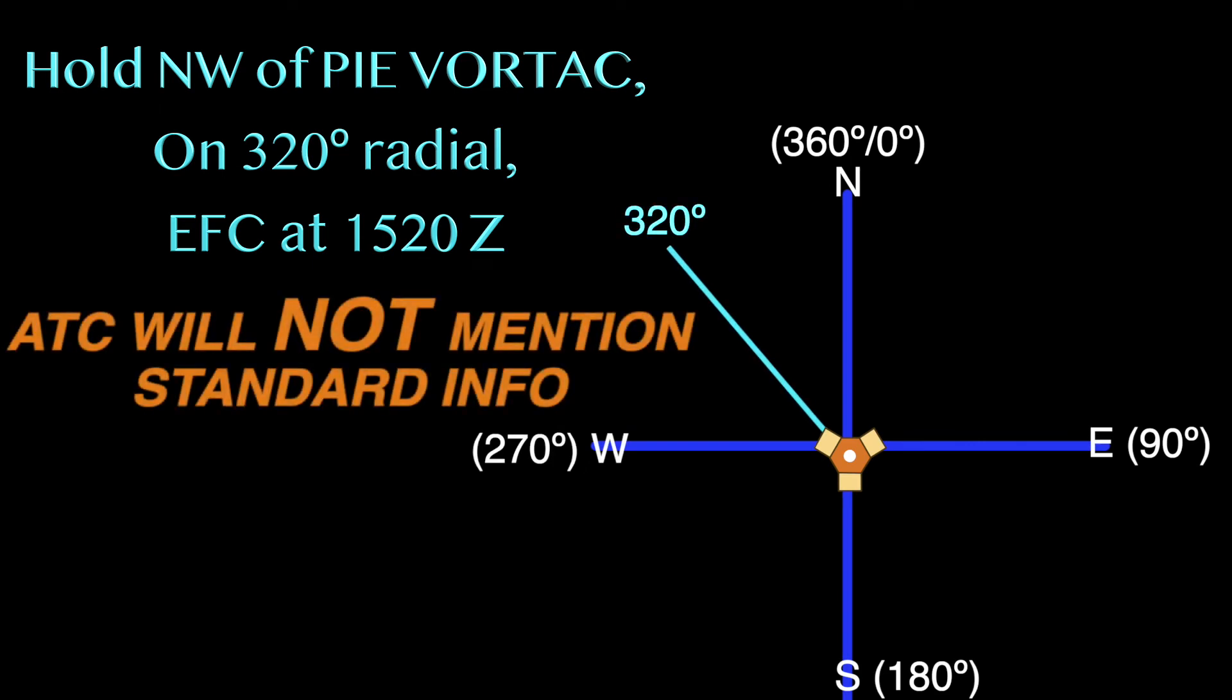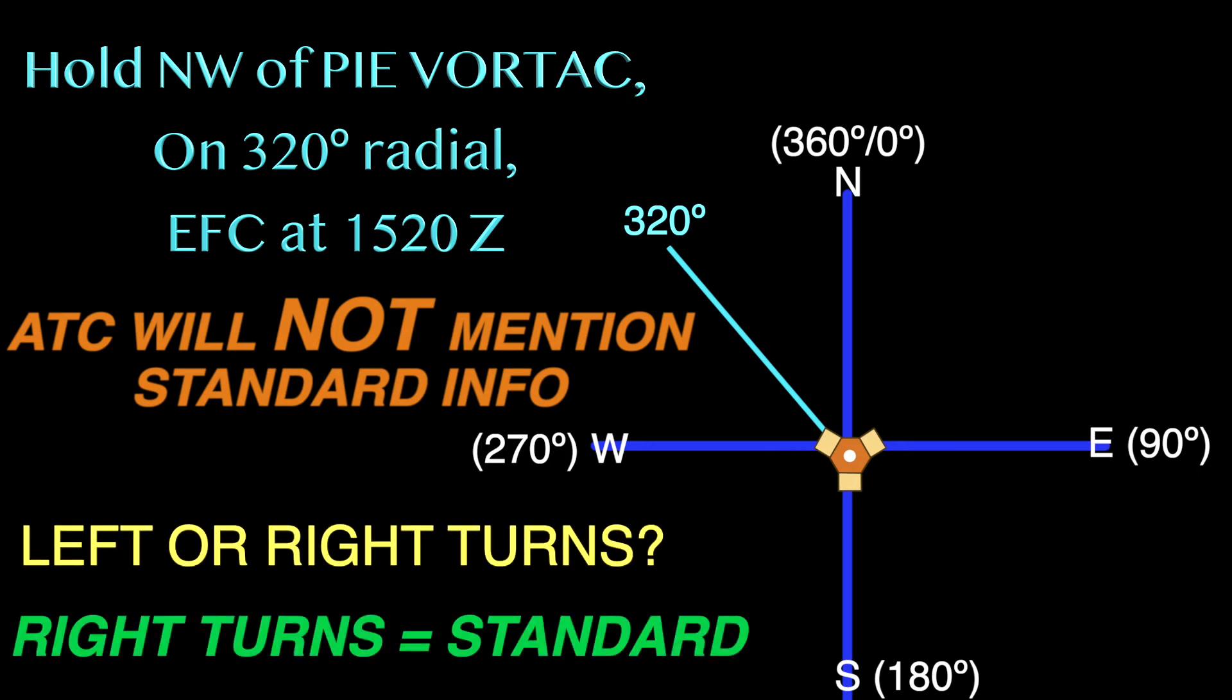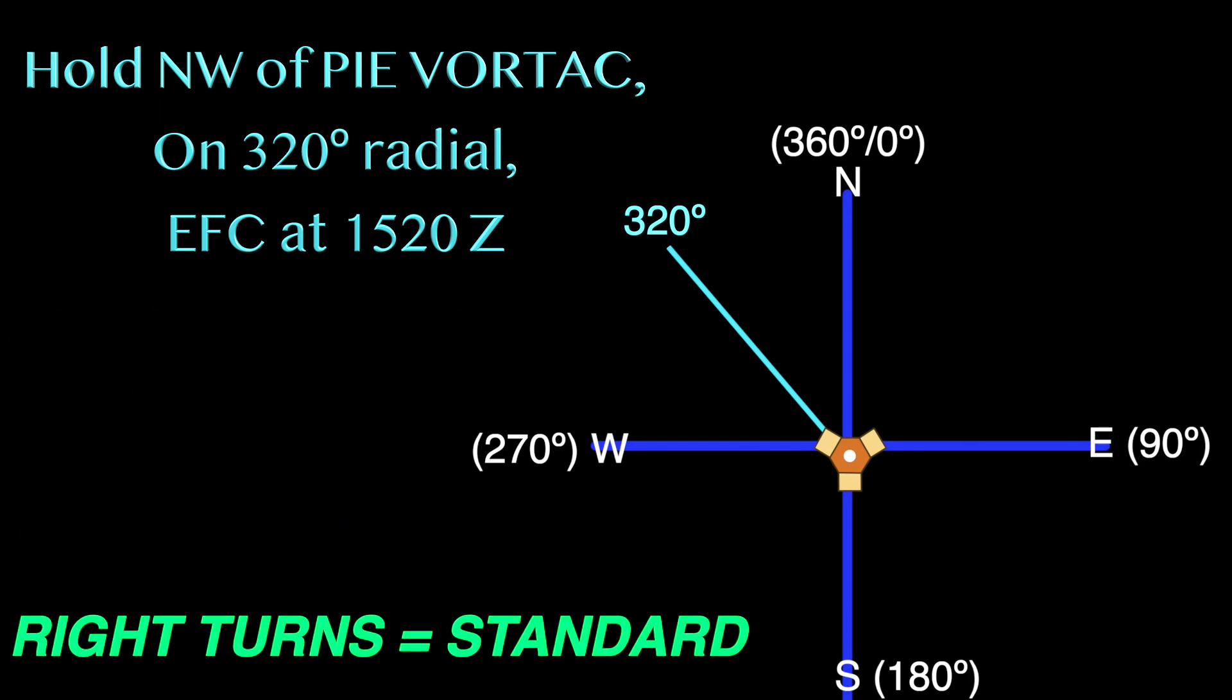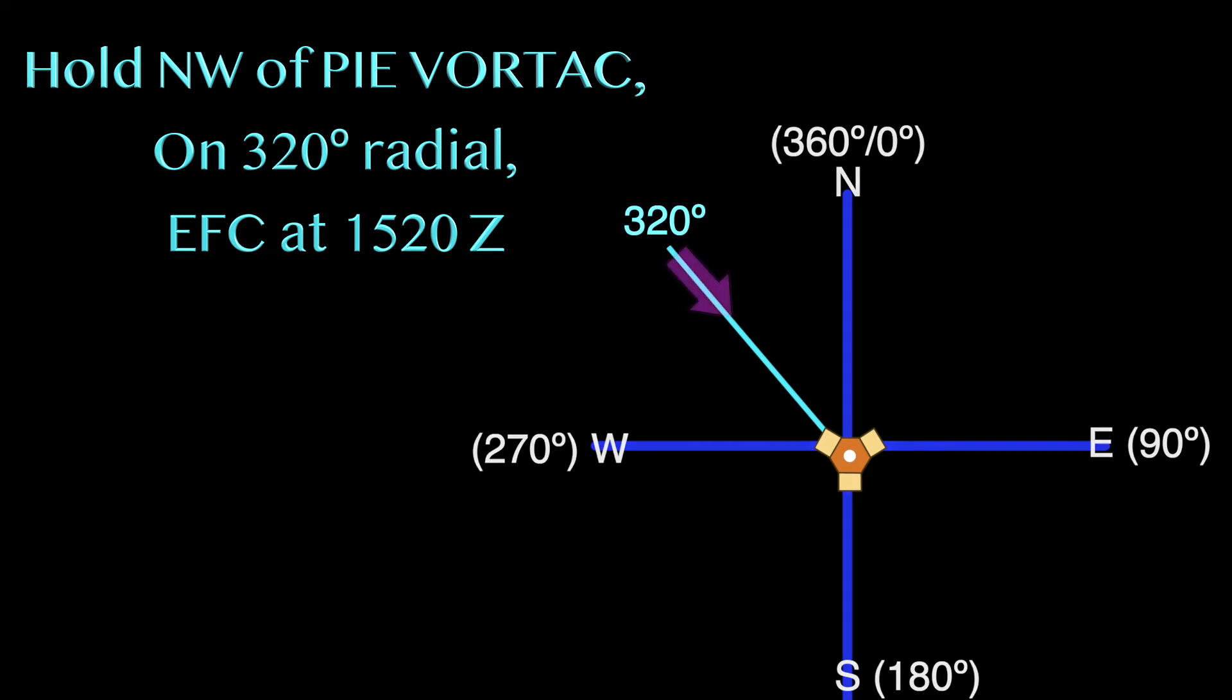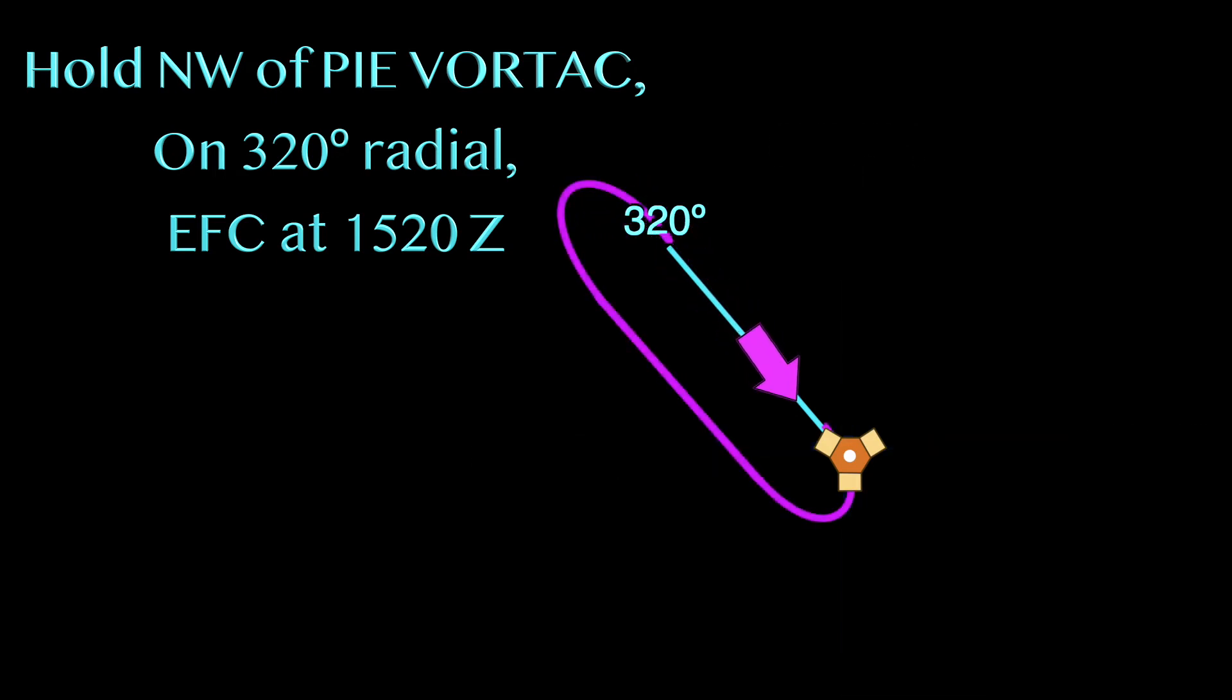Note that the air traffic controller will not verbally include information that's considered standard in their clearances. Since in their instruction, left or right turn was not mentioned, so we know they want us to make right turns since right turns are standard in holding directions. So to reflect that information onto our visuals, we can track along the 320 radial towards the fix and take a right turn immediately after crossing the fix. We can complete drawing the holding course from there, the inbound leg represented by the 320 radial.